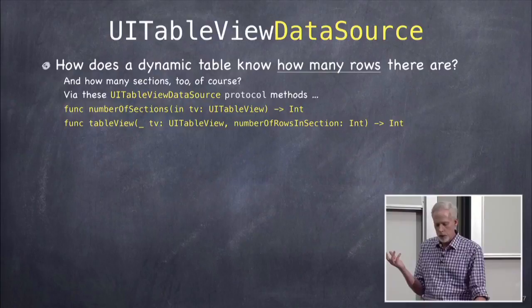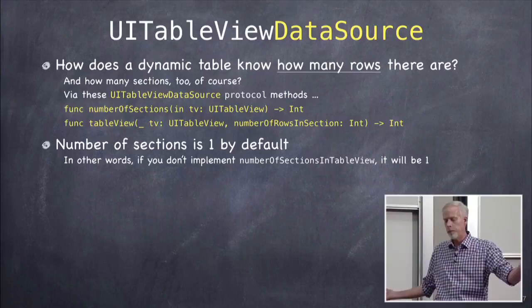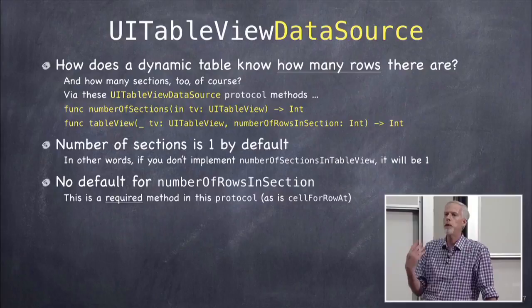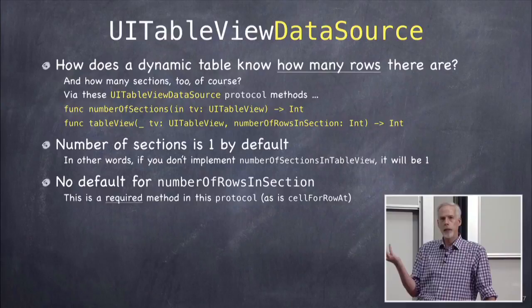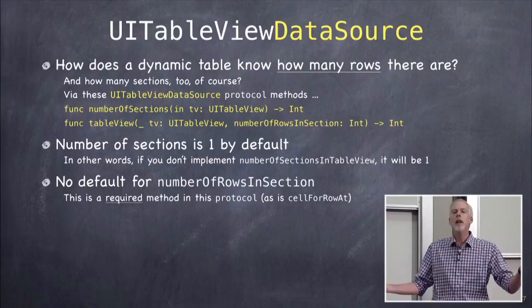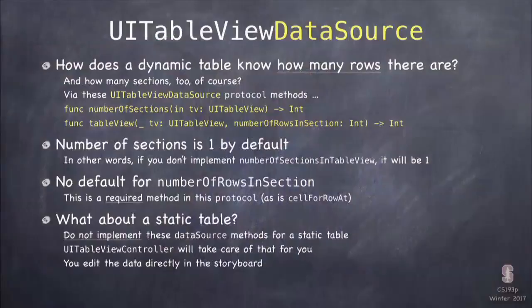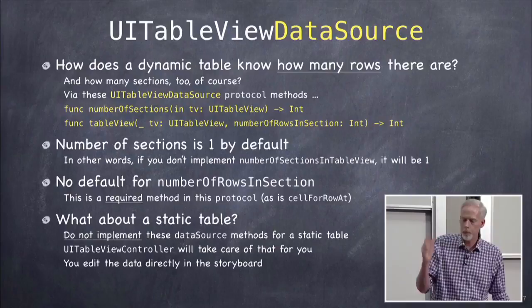The data source also needs to know how many sections and rows. The method numberOfSectionsInTableView returns Int — that one's optional; if you don't implement it, it assumes one section. The method numberOfRowsInSection, where it passes you a section number and you say how many rows, is mandatory. You must answer for every single section you claim to have. It needs this because it's a scroll view and needs to set its content size — it needs to know how big a thing it's scrolling over.